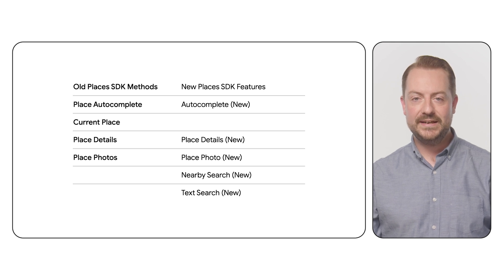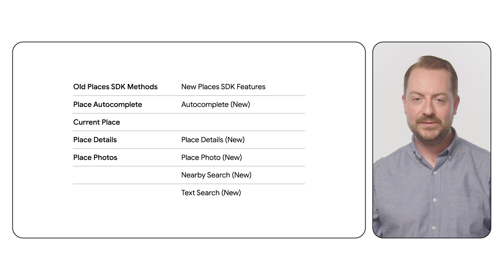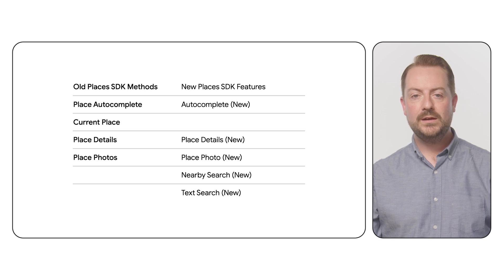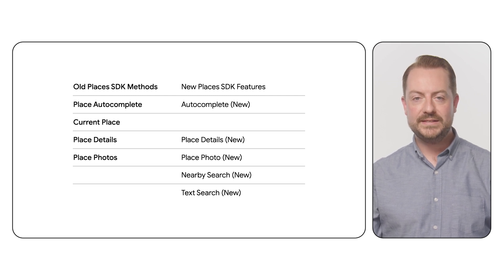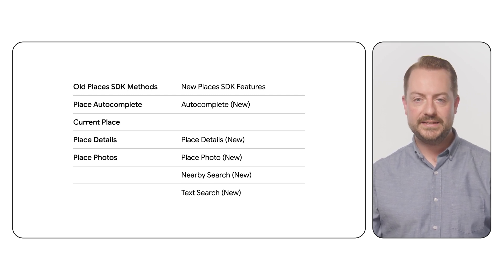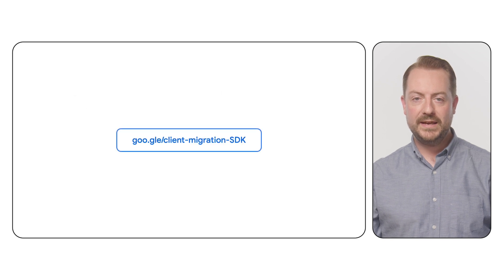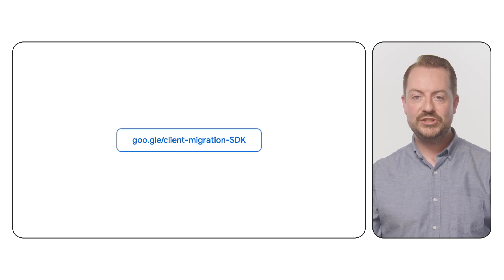The SDK is designed to have the same methods, and will switch to the new Places APIs in the background. Please note that current place is only available in the old Places SDK for Android. To implement current place using Places API new, check out this link.